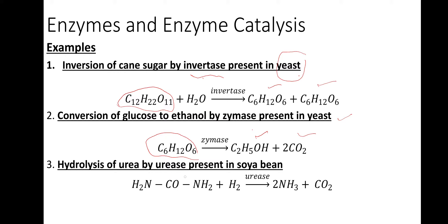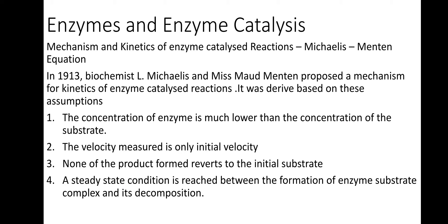Hydrolysis of urea by urease present in soya bean — the enzyme urease is used for hydrolysis of urea. So one enzyme is used for hydrolysis of urea and another for conversion of glucose to ethanol.